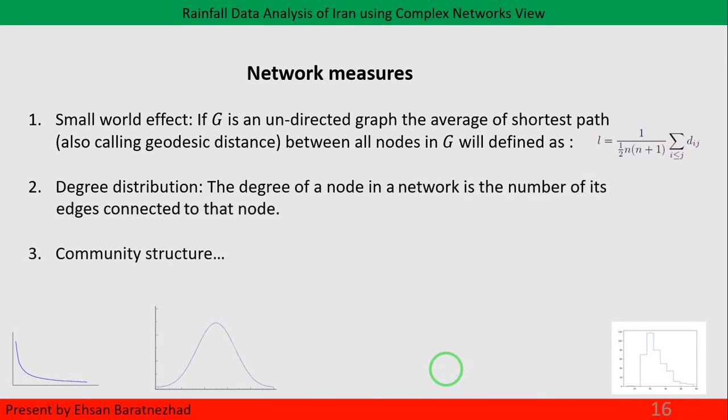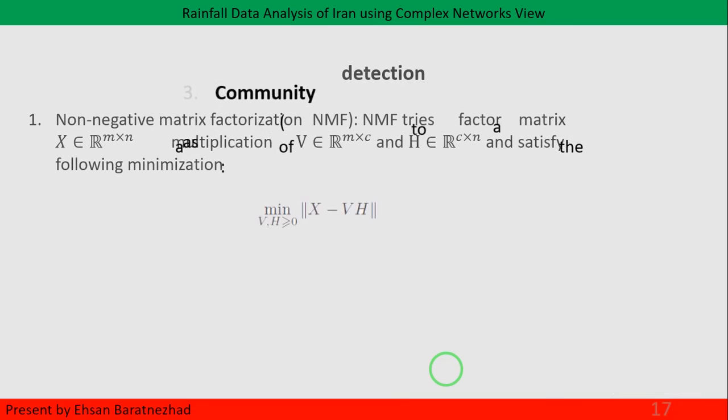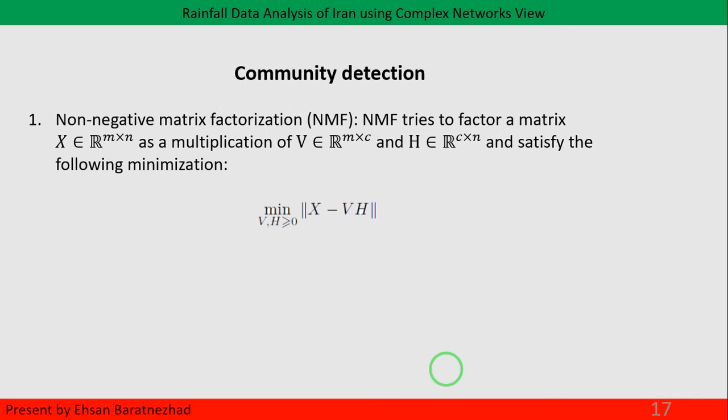Now it's time to find the communities in our network. In detecting communities, not having an explicit ground-truth answer is one of the biggest obstacles in this field, so a specific definitive answer to a community detection problem can't be found. We therefore decided to pick two algorithms from two totally different approaches.